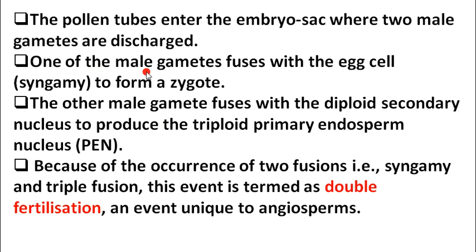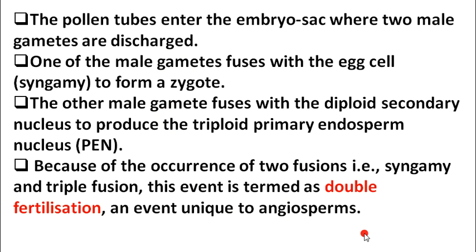Because two fusions occur — syngamy (male gamete + egg cell → zygote) and triple fusion (male gamete + diploid secondary nucleus → PEN) — this is called double fertilization. This is a very important concept and exam questions can be asked about it. Double fertilization is an event unique only to angiosperms — not found in pteridophytes, bryophytes, or gymnosperms.